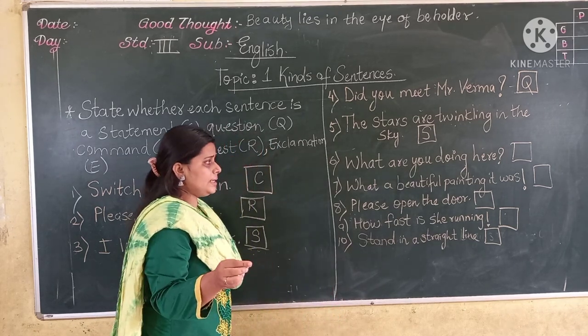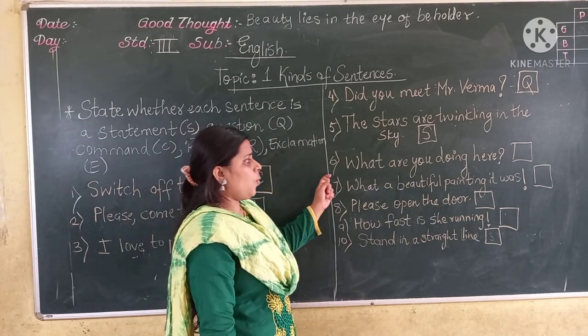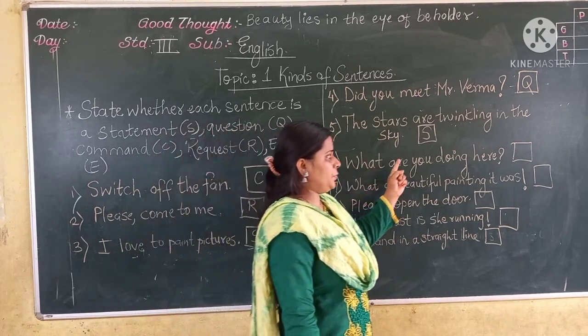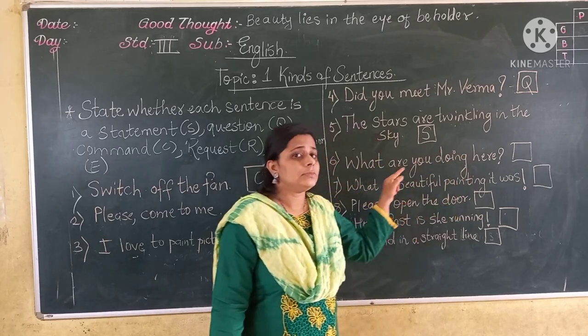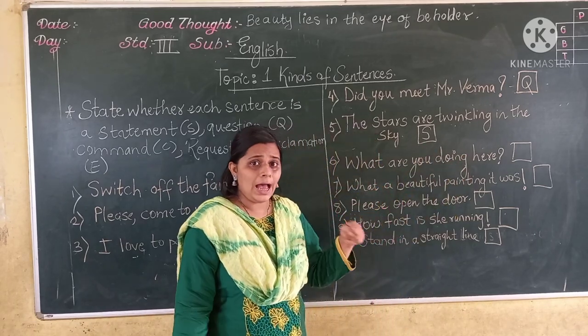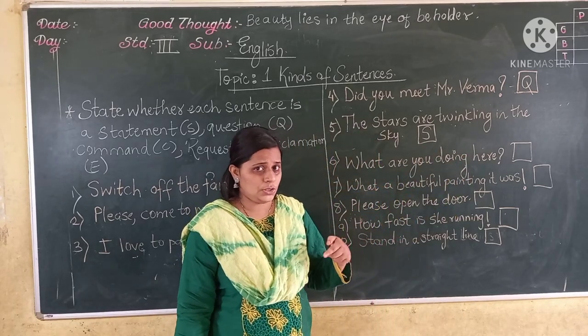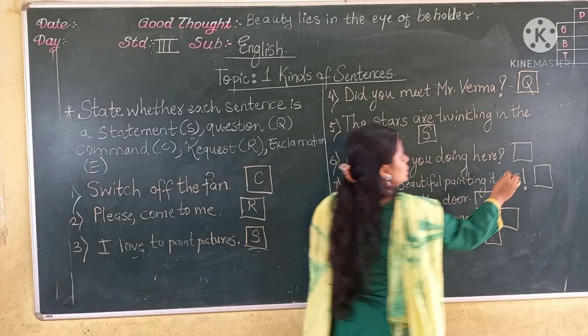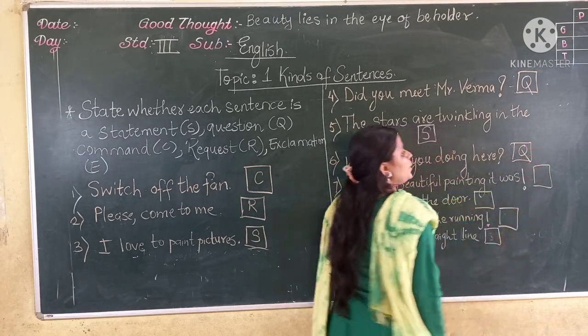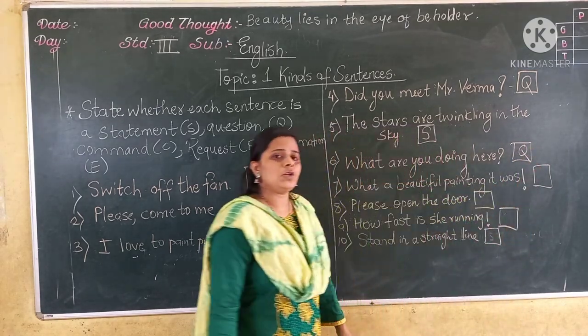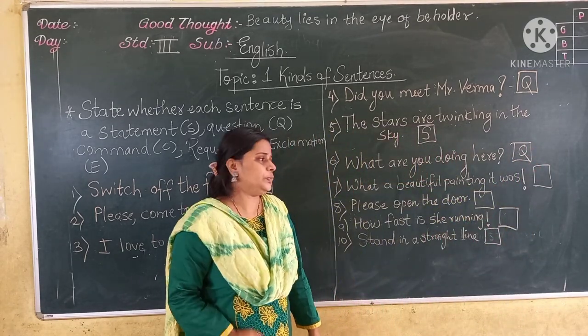Now the next sentence: What are you doing here? This sentence asks a question, so it is a question. What are you going to write for question? Q.